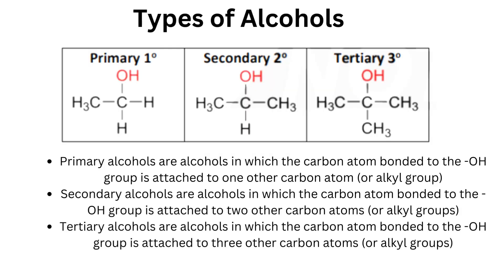Types of alcohols. Primary alcohols are alcohols in which the carbon atom bonded to the OH group is attached to one other carbon atom or alkyl group. Secondary alcohols are alcohols in which the carbon atom bonded to the OH group is attached to two other carbon atoms or alkyl groups. Tertiary alcohols are alcohols in which the carbon atom bonded to the OH group is attached to three other carbon atoms or alkyl groups.